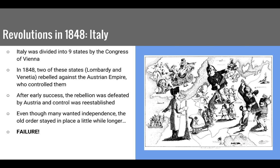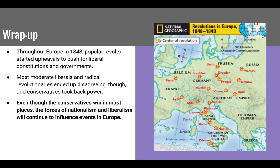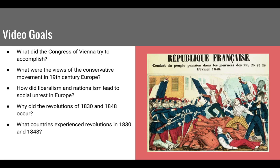Keep in mind these ideas of liberalism and nationalism against the old order of conservatism. Throughout Europe in 1848, popular revolts pushed for liberal constitutions and governments. Most were not successful — one key reason being that moderate liberals and radical revolutionaries disagreed on what should take place after overthrowing the system. Conservatives won out in most places. But liberalism and nationalism did not disappear — they continued to influence events in Europe. For more information, go to the reading in your PLP, and feel free to ask questions.